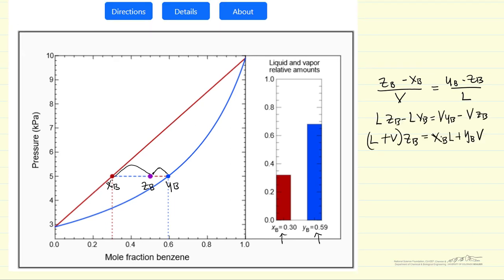I've rearranged this and then L plus V, the total amount, would be the feed. In this case, it will be one mole for the simulation. xb times the amount of liquid would be the number of moles of b in the liquid phase, and yb times the moles of vapor is the number of moles in the vapor phase for component b. They should equal the number of moles in the feed times the mole fraction. This is just a mass balance and that's all the lever rule is. It's just a mass balance to visually help determine how much liquid, how much vapor we have.